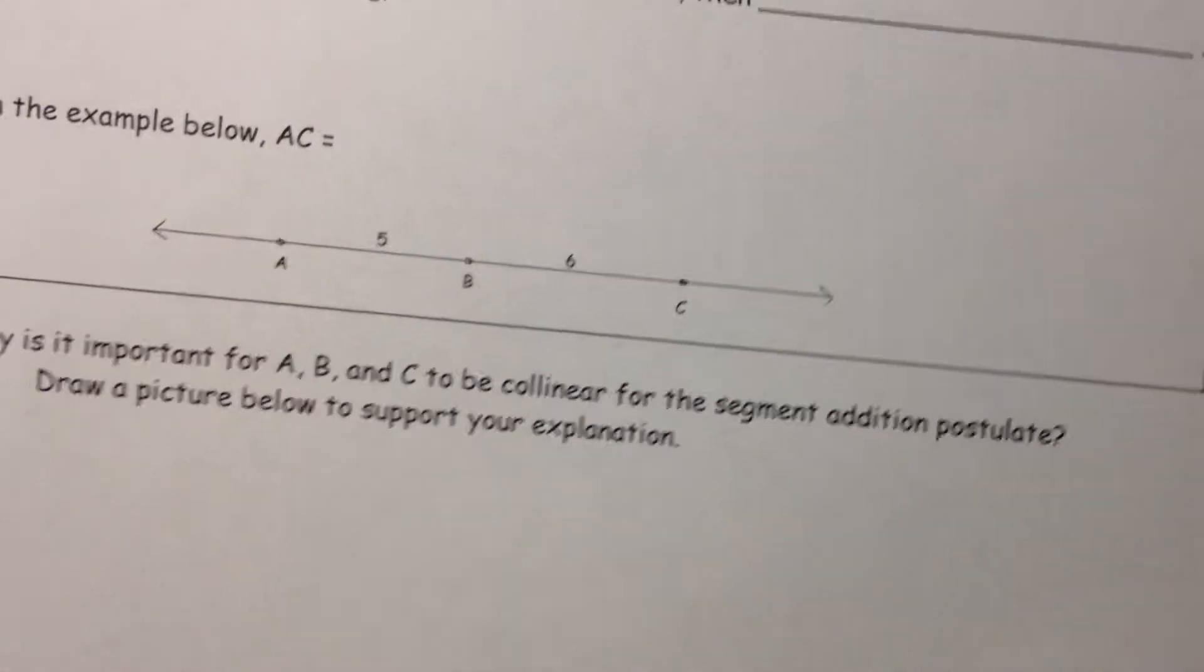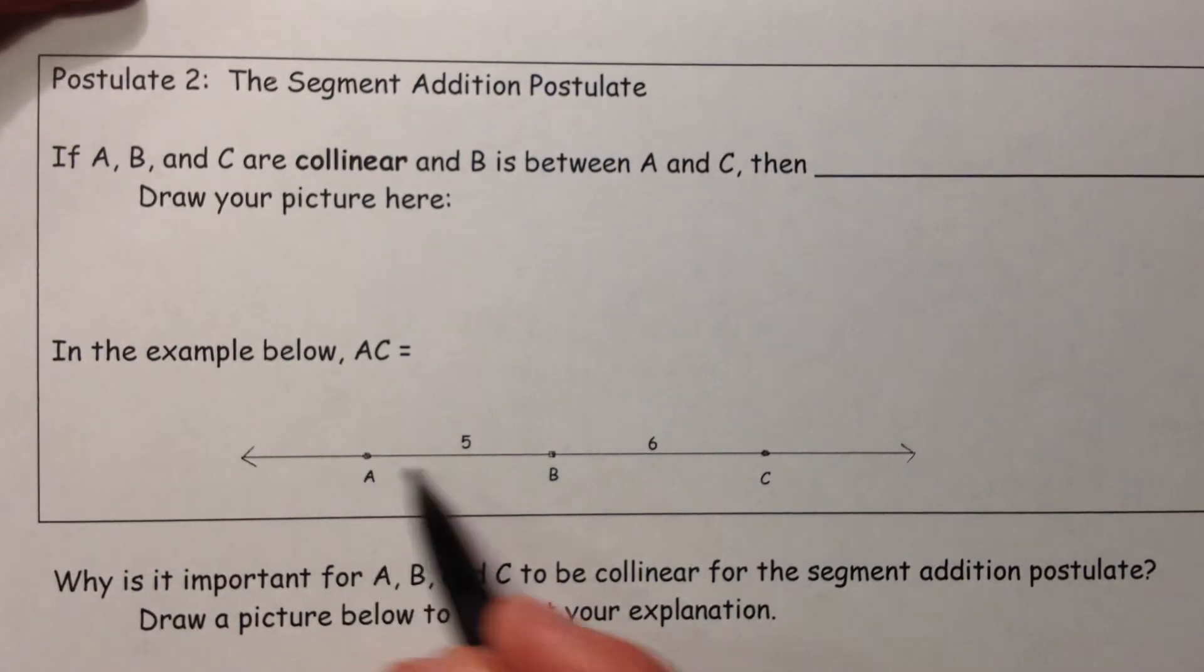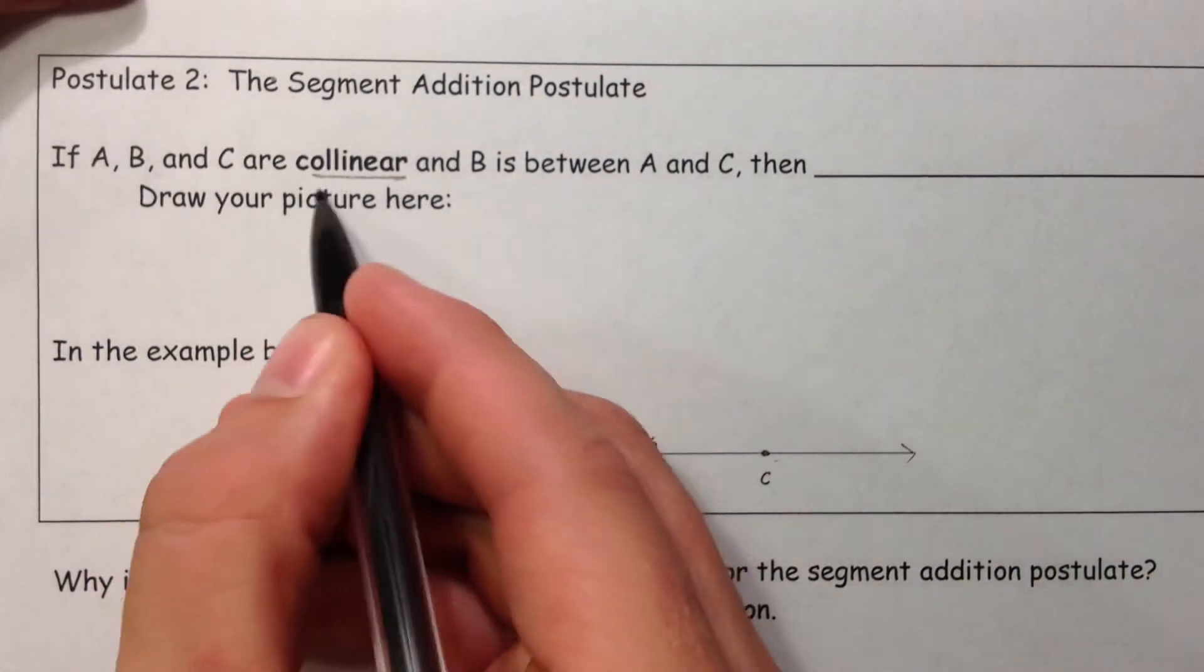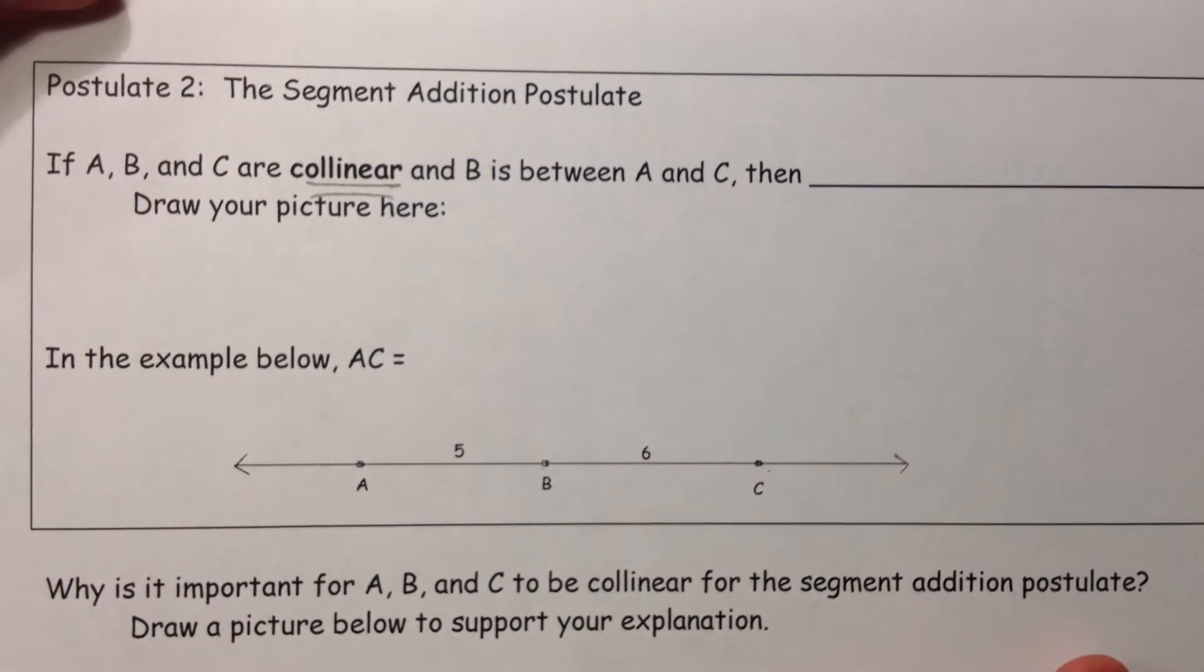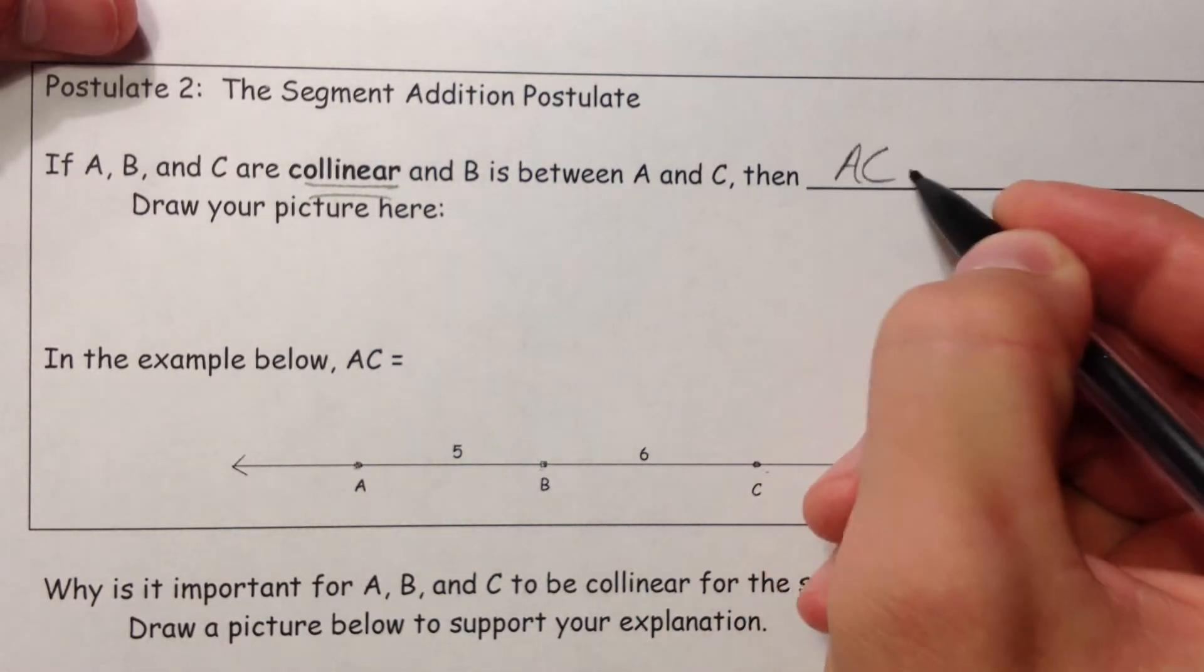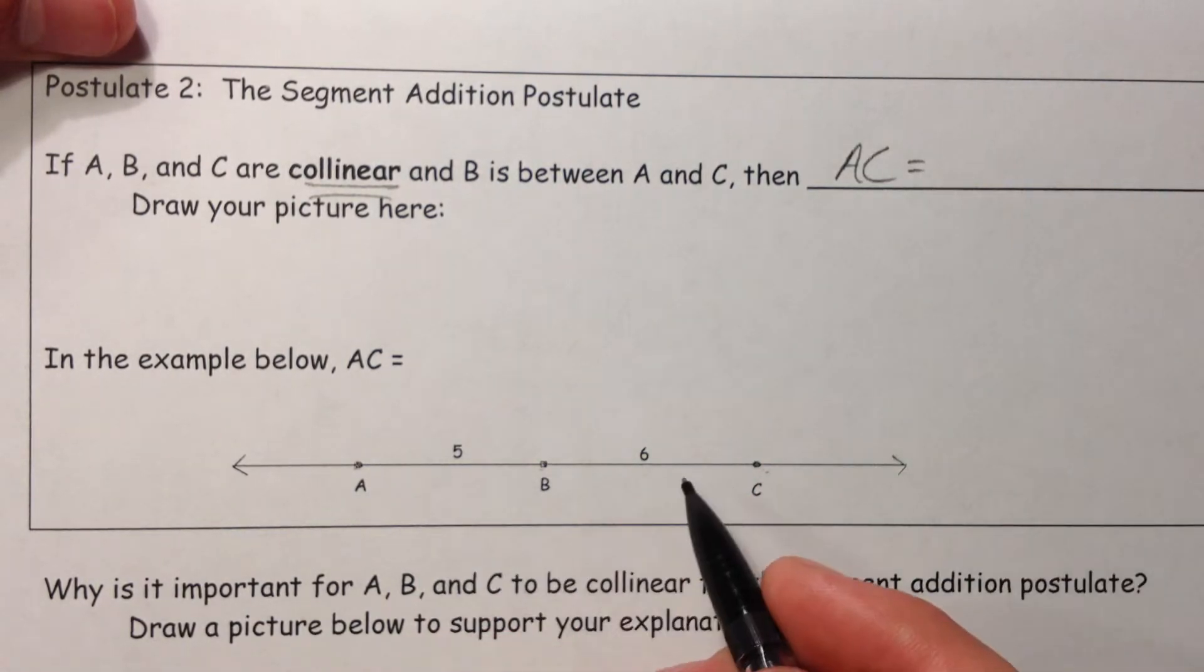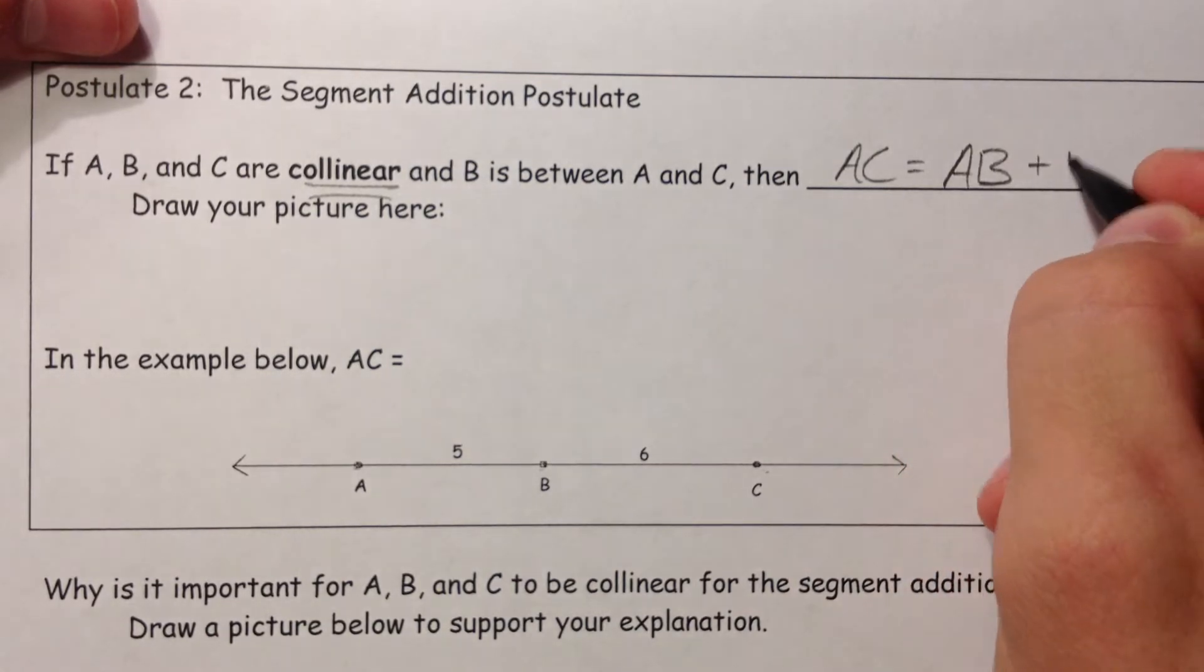Segment addition postulate. Basically if you have three points, A, B, and C, and they are collinear, that's a word that we talked about last time, meaning they're all in one line, they share a line, and B is between C, then the whole thing AC is equal to when you add up the smaller parts. So AC is equal to AB plus BC.